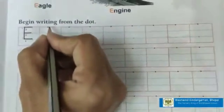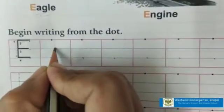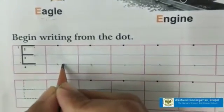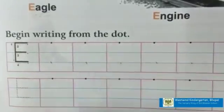The pictures that begin with the sound of letter E are engine and egg. Children, we will begin with the line concept. This is red line, this is blue line, lower blue line and red line.